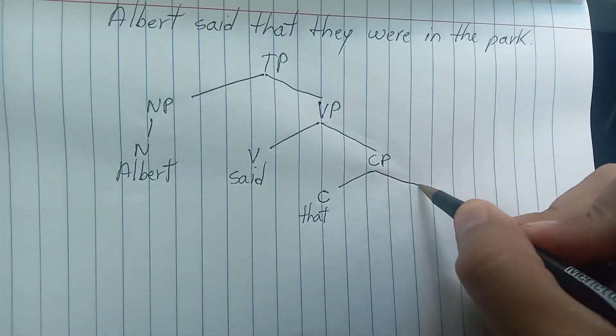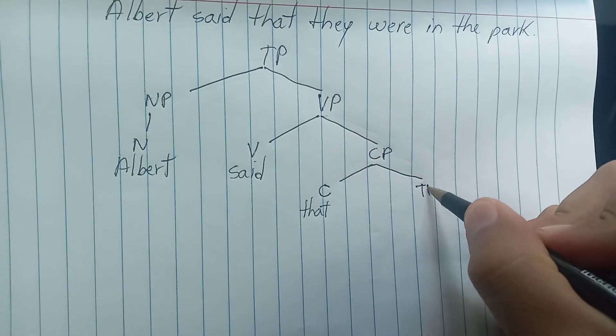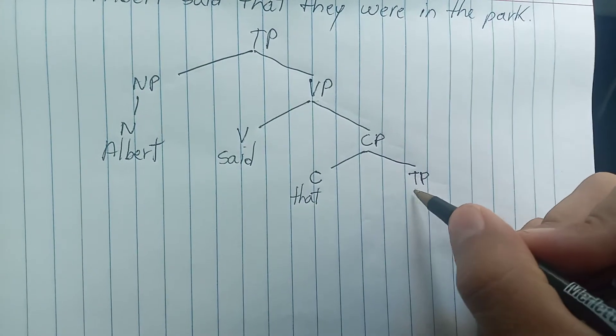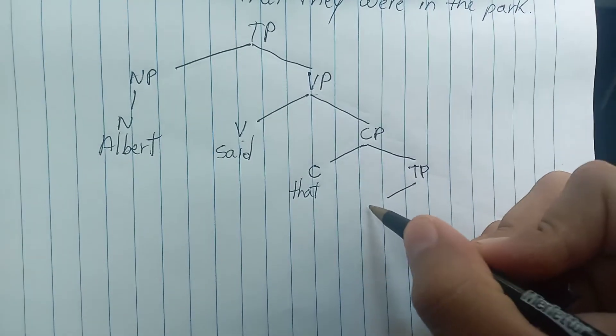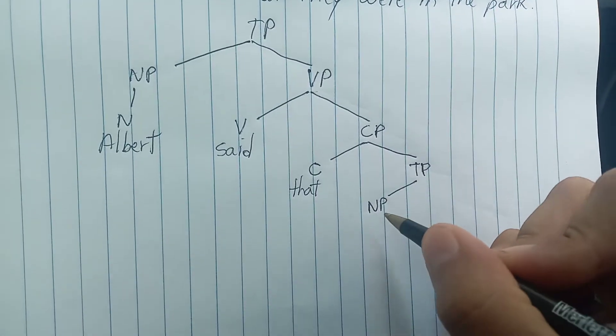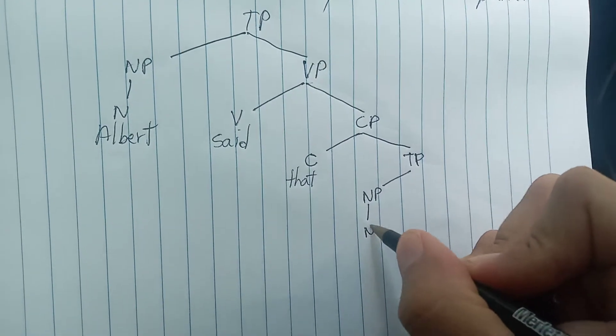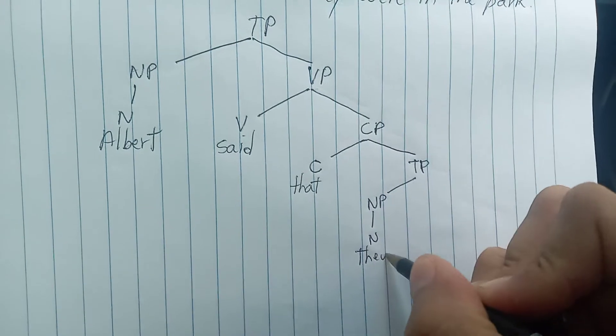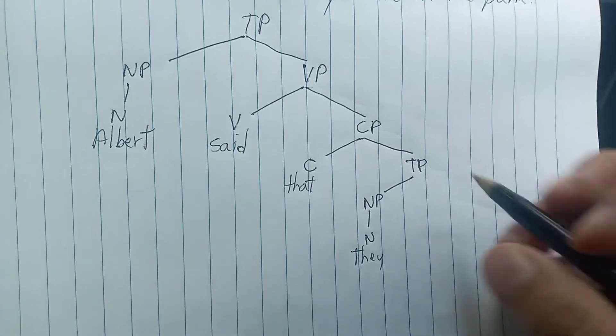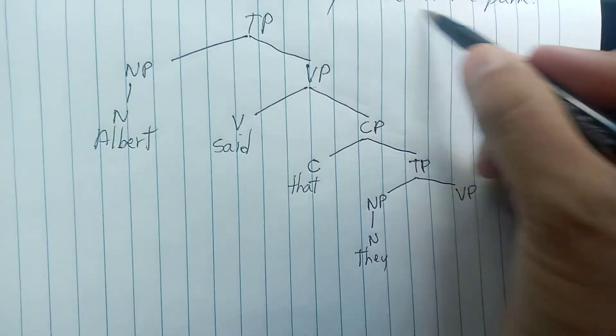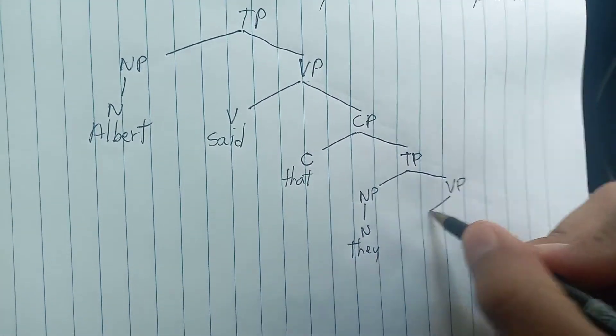What I have to do is to draw another line and write the letters TP, and that TP is compound by another noun phrase which is a pronoun they. Here we have another verb phrase, were in the park, and that verb is were.